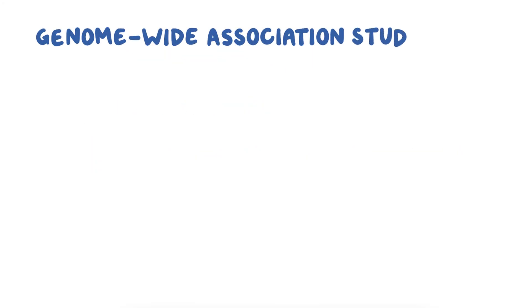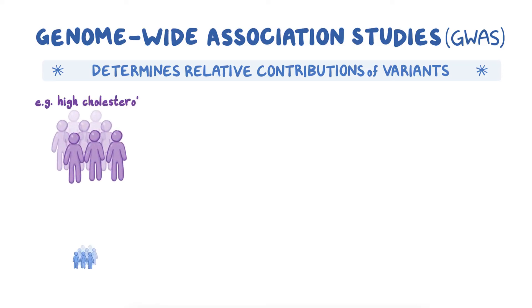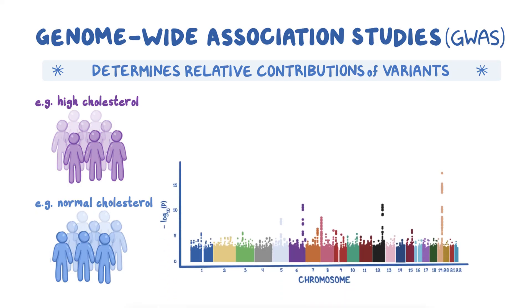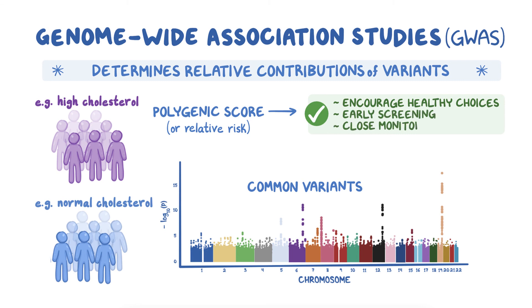Population-based studies called genome-wide association studies, or GWAS, can help determine the relative contributions of variants by identifying variants that are more common in the genomes of affected individuals compared to unaffected. Genetic testing for polygenic variants provides a polygenic score or relative risk of developing the condition. This information can be used to encourage healthy lifestyle choices and, in some cases, earlier screening or closer monitoring.